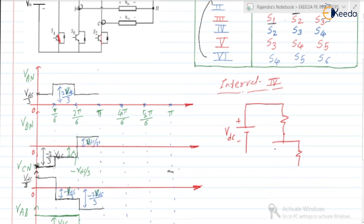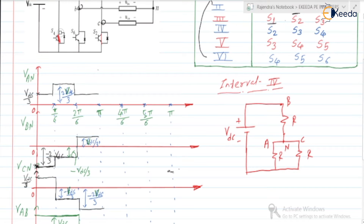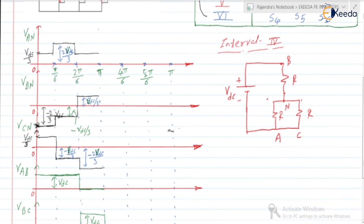We can draw the circuit as follows: this is R, R, and the neutral point R. This is phase B connected to the positive, and phase A and phase C are here on the negative side. So R and R are connected in parallel, giving R/2. We can write it as VDC with R/2 and R in series, with neutral point in between.